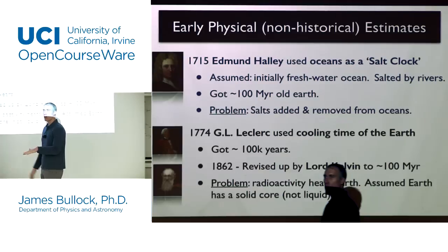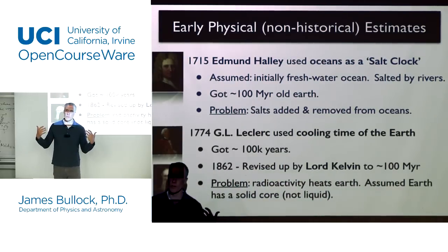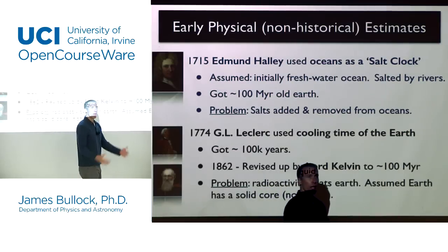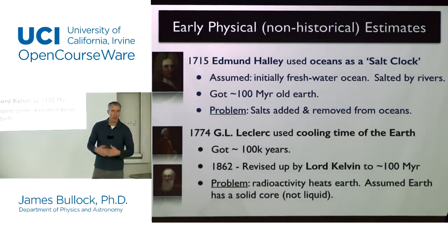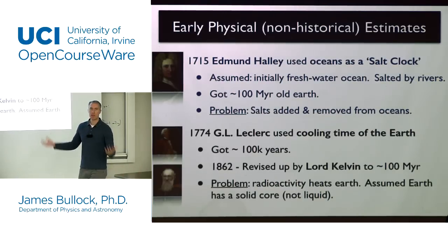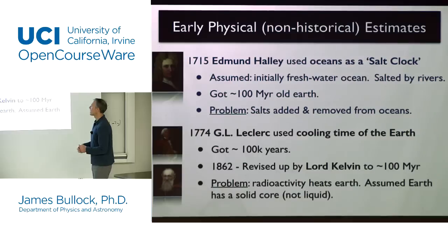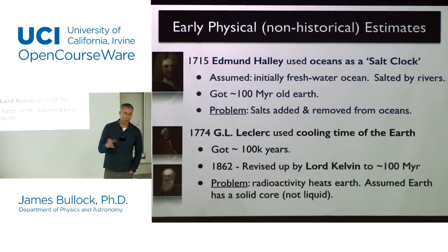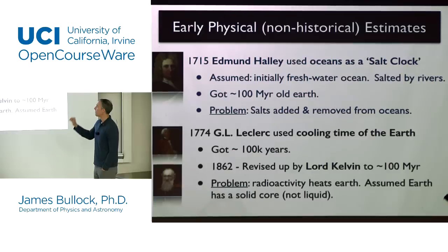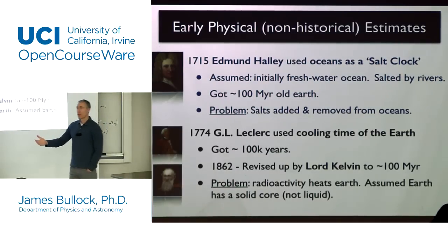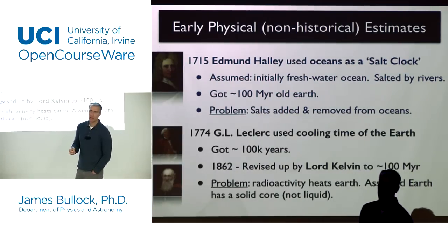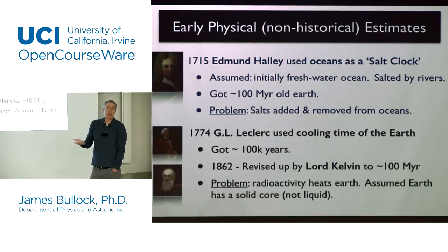Halley assumed that if the oceans started perfectly fresh, he could measure the rate at which salts are being dumped in by rivers, and then calculate what age of the Earth you get if you allow this process to reach the current salinity of the ocean. He got something like 100 million years. The problem was his assumption: it's not necessarily obvious the earliest oceans were perfectly fresh water. Also, salts are both added and removed from the oceans via different processes. So it turns out this isn't the best way to age-date the Earth, but it's a useful idea.